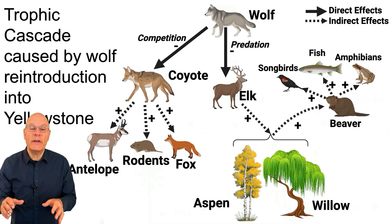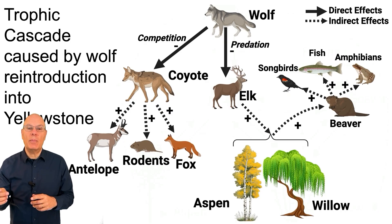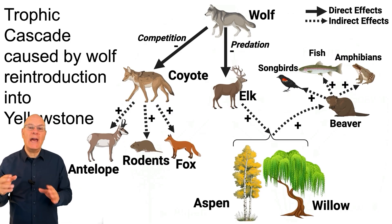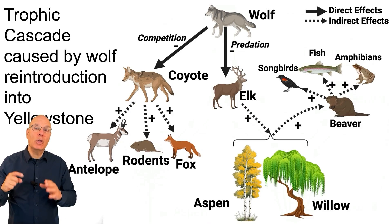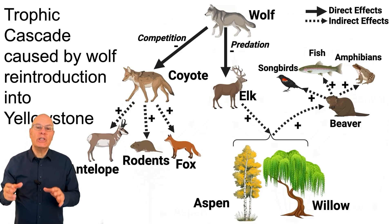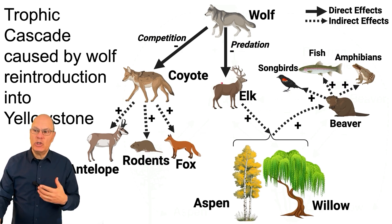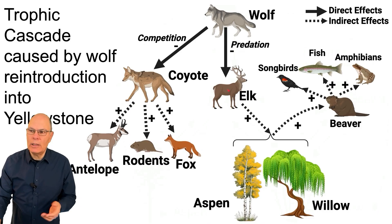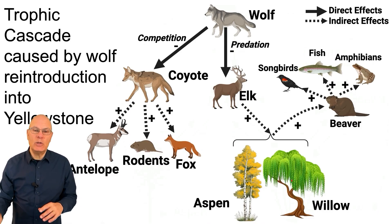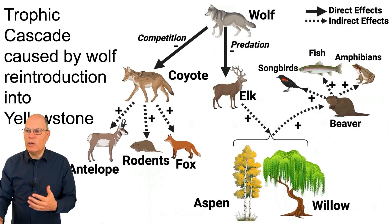Another example of a trophic cascade relates to the reintroduction of wolves into Yellowstone National Park. That reintroduction happened in the 1990s. Previous to that, wolves had become locally extinct in the Yellowstone ecosystem, mostly due to overhunting. When wolves were reintroduced, they started to prey upon elk. The elk, in the wolves' absence, had reduced the numbers of aspen and willows, particularly along riverbanks. So the aspen and willows were able to regrow.